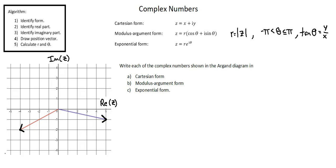Now let's go to our exercise. Our requirement reads, write each of the complex numbers shown in the argand diagram in A, Cartesian form, B, modulus argument form, C, exponential form.